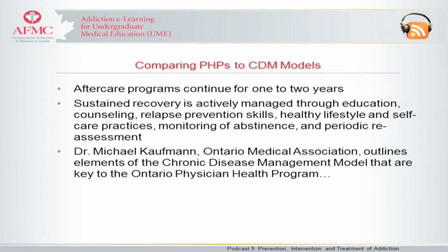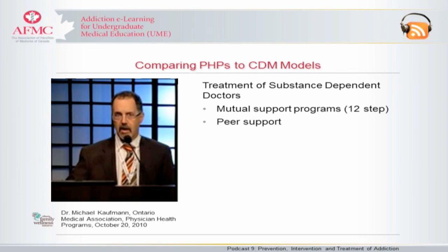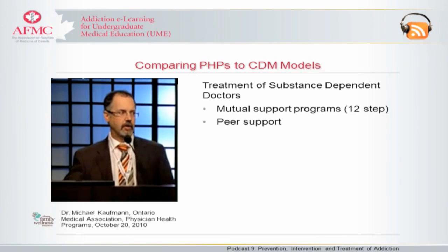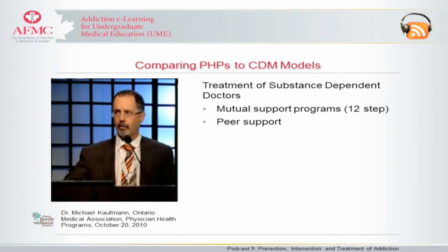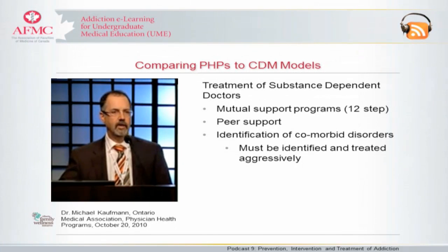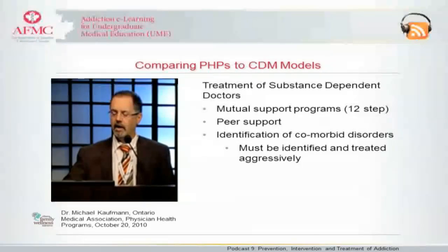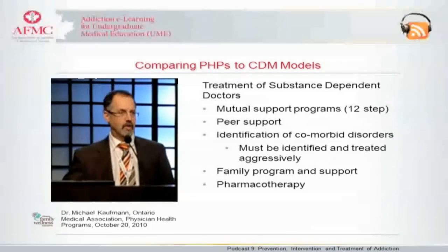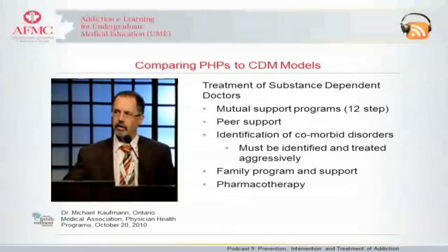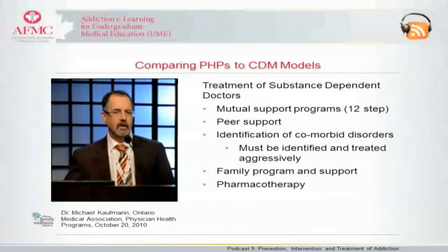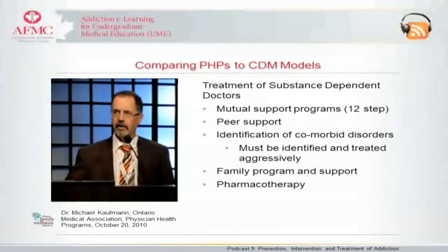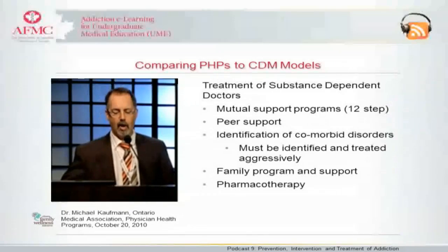Dr. Michael Kaufman outlines elements of the chronic disease management model key to the Ontario Physician Health Program. Group support, mutual support, and peer support are central — with recovering health professionals of different kinds meeting in professionally facilitated groups across the province of Ontario. Identification of comorbid disorders is also critical, as the risk of relapse increases with multiple comorbidities, especially psychiatric, pain-related, and other addictions. If these are not identified and treated aggressively, patients are at risk. Additionally, in treating addictions, drugs such as naltrexone and antabuse are very useful for drug and alcohol problems and are often not prescribed frequently enough.